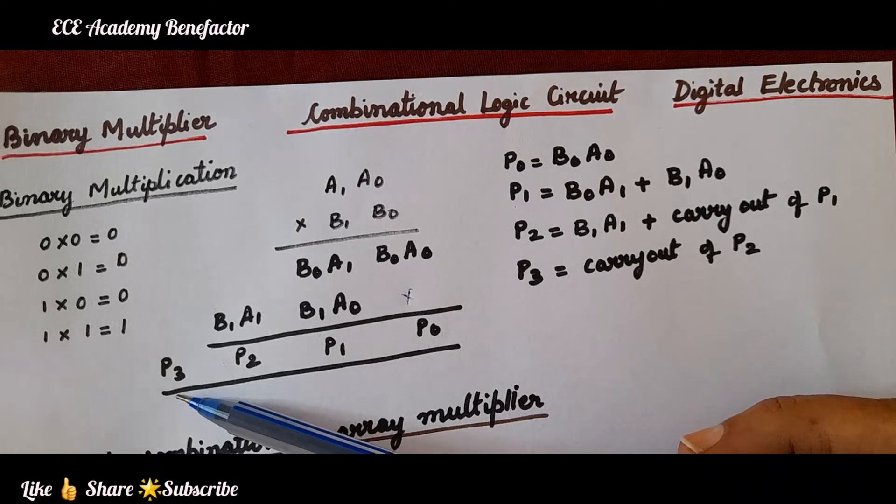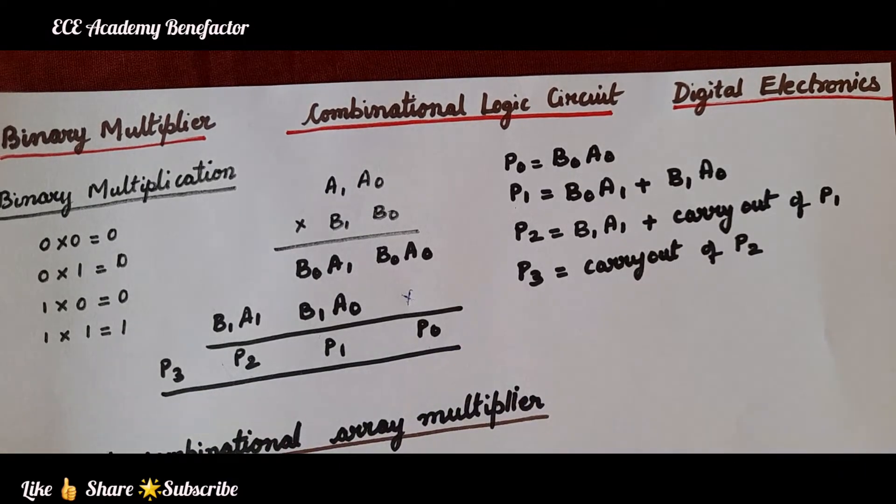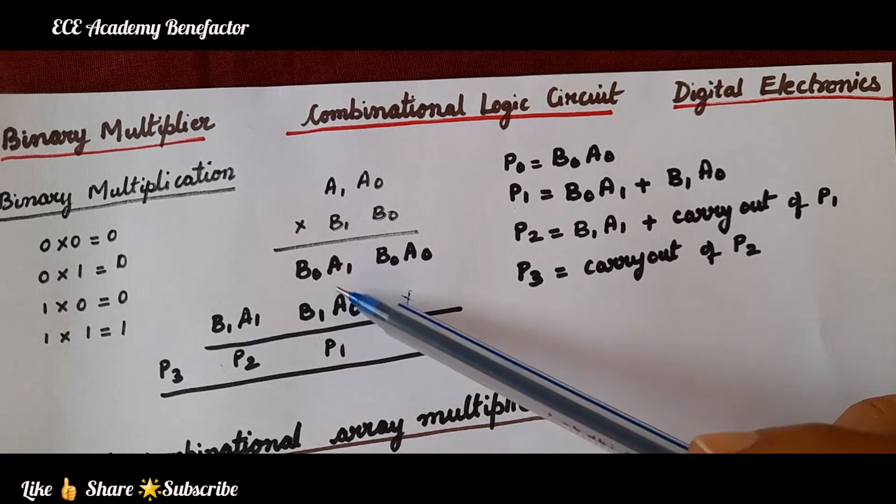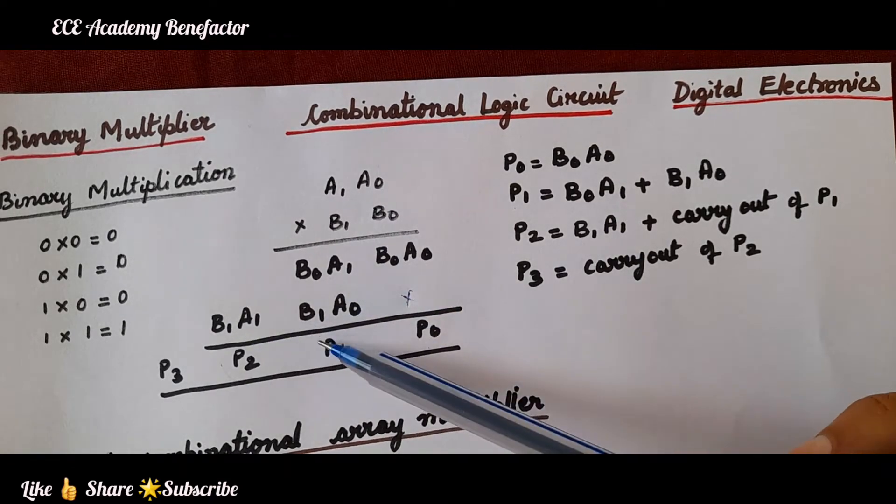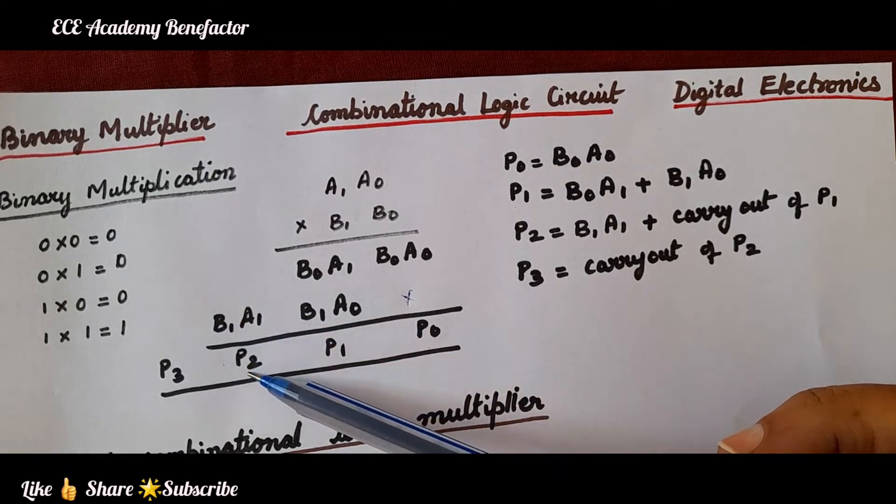The product comes to be as p3 p2 p1 p0. Here we require 2 half adders, first to add these 2 numbers and then the generated carry of p1 will be added to this b1a1 to get p2.